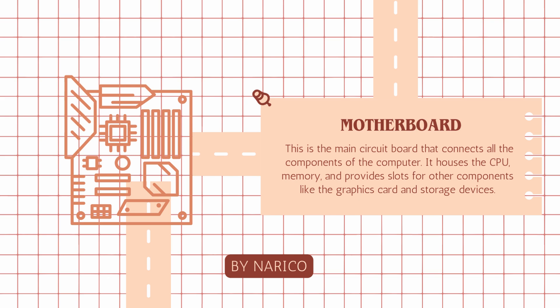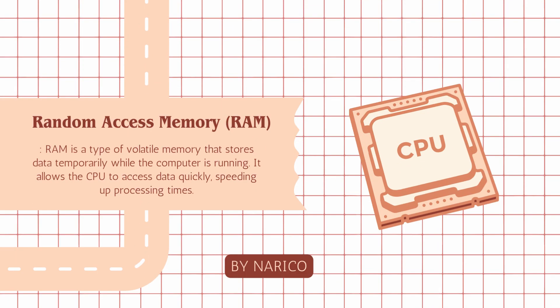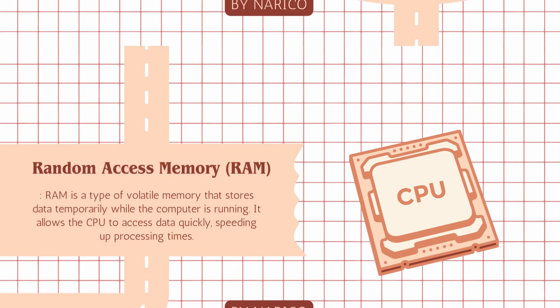Motherboard: this is the main circuit board that connects all the components of the computer. It houses the CPU, memory, and provides slots for other components like the graphics card and storage devices. Random access memory, RAM: RAM is a type of volatile memory that stores data temporarily while the computer is running. It allows the CPU to access data quickly, speeding up processing times.